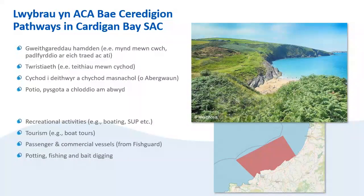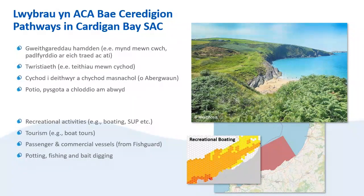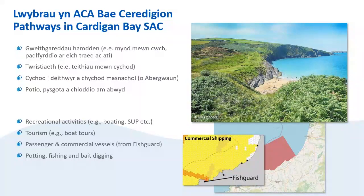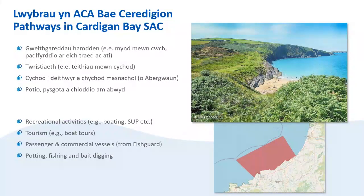Next we go to Cardigan Bay SAC. Recreational activities are undertaken along the coastline from boating to paddle boarding. The heat map shows some of the areas at the coast in white, which does not necessarily mean that activity doesn't occur here but that there may not be available data. Many wildlife tour boats operate in Cardigan Bay. Passenger ferries and commercial vessels operate out of Fishguard which, although outside the boundaries of the SAC, could host INNS that may spread along the coast into the SAC. Potting, fishing and bait digging also occurs in the SAC.